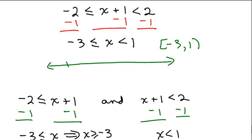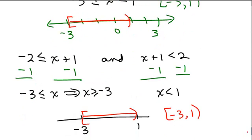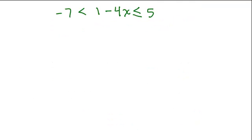And then if I were going to write my solution on the number line, let's say this is 0, 3, and negative 3, I would have this using interval notation. So that's the same answer we got doing it as two separate pieces and coming up with our solution. Let's do the next one.